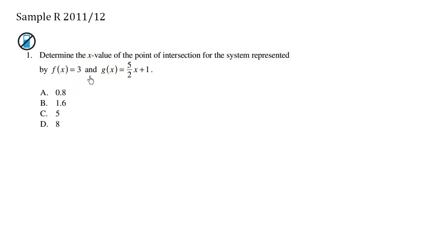What we have here are different y values. We have y = 3 and we have another function with y = 5/2x + 1. When we have the same y values, that's the point of intersection.